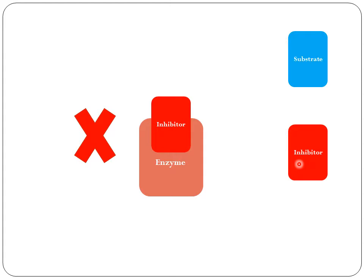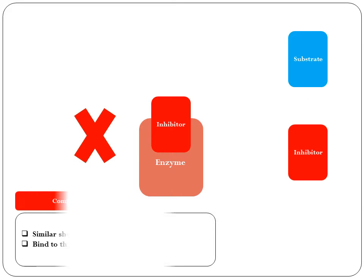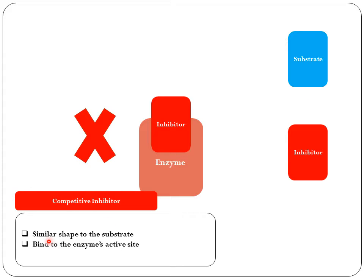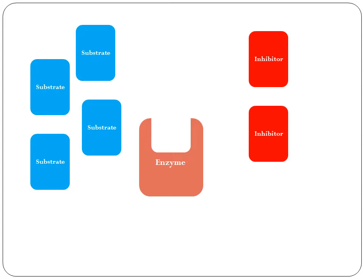It is very clear that in order for the inhibitor to bind to the active site, it must have a similar shape to the substrate. This is shown here — we have a similar shape between the competitive inhibitor and the substrate, and that's why it has the ability to bind to the active site of the enzyme.